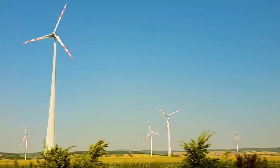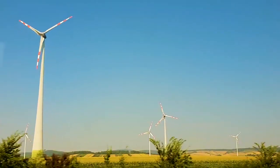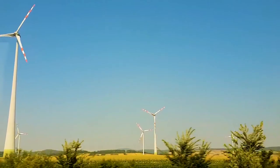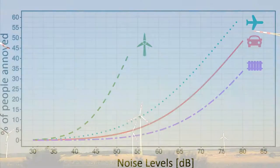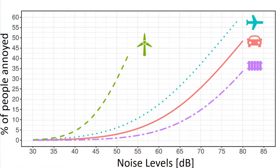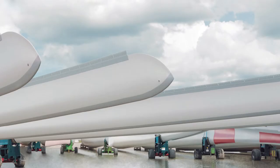Wind turbines have become a part of the landscape in many places. But as the number of wind turbines increases, the awareness of the community regarding the noise emitted by the turbines also increases. Depending on the regulations, this can restrict the construction of new wind parks or force them to run at a reduced power. To overcome this problem, several manufacturers have adopted the use of trailing edge serrations at the tip of the wind turbine blades.